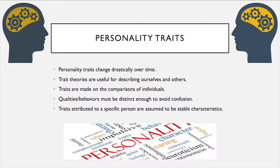Traits attributed to a specific person are assumed to be stable characteristics. For example, if a person tends to be generally friendly, we will expect them to be friendly the next time we see them.